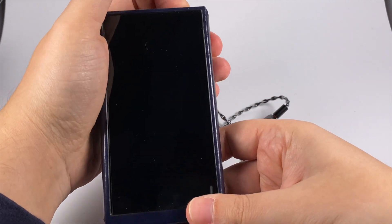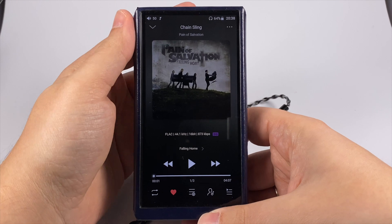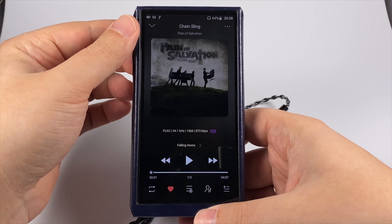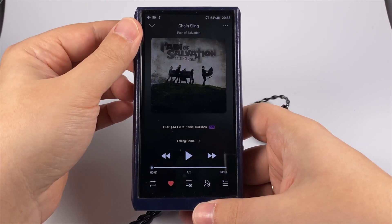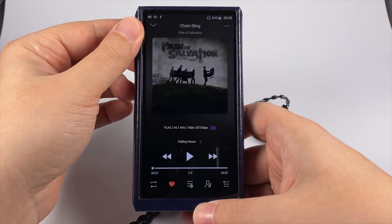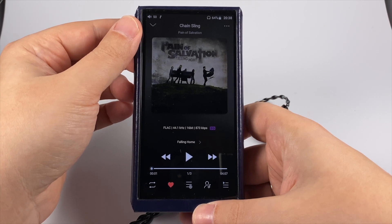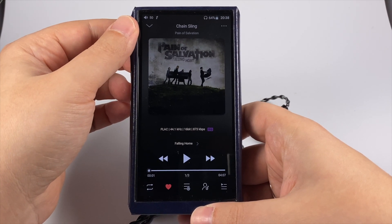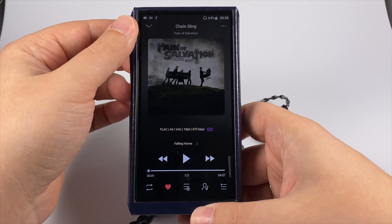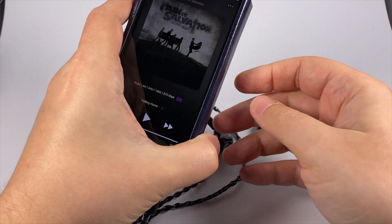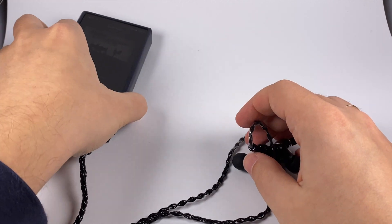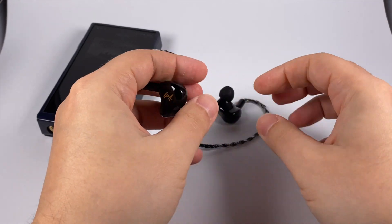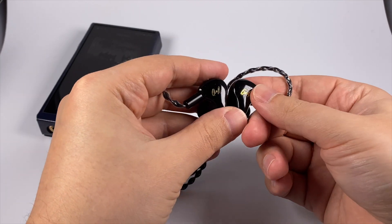And actually here is example of such case. It's Pain of Salvation, acoustic album, Falling Home and Chain Sling. In this acoustic, I'm not sure is it live or is it studio album? Well, most probably it's studio album. I don't know why I said that. So in this album they have really good drums and bass lines sounding really bold. And with this in-ear monitor they are sounding even a bit bolder. So it's a bit not realistic, but sounding really, really pleasant. It's kind of spice for the music.